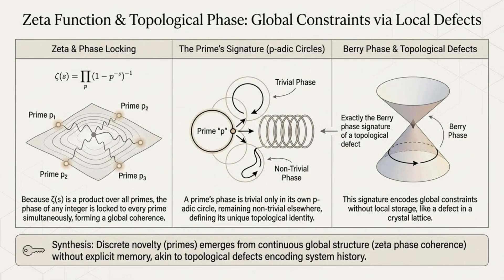The zeta function and topological phase show global constraints via local defects. Since the zeta function is a product over all primes, the phase of any integer is locked to every prime, forming global coherence. Primes have a unique topological identity, like defects in a crystal lattice.